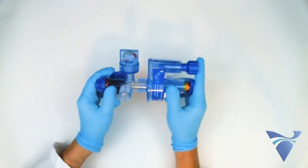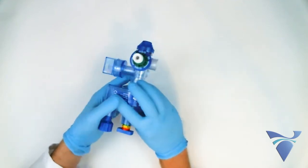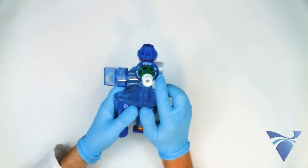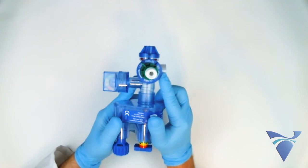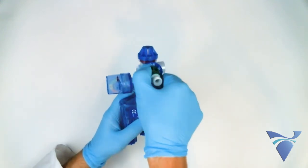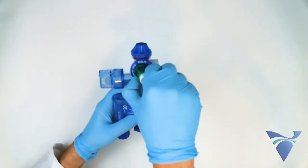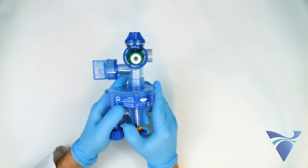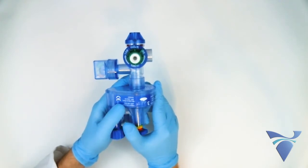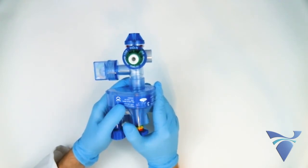Also included is a feature to adjust the patient's FiO2 from 100% to 50%. Simply rotate the entrainment knob to the 50% setting. This will entrain ambient air to combine with the oxygen, allowing you to decrease your flow meter by roughly one-third of its original setting to deliver the same amount of flow to your patient.